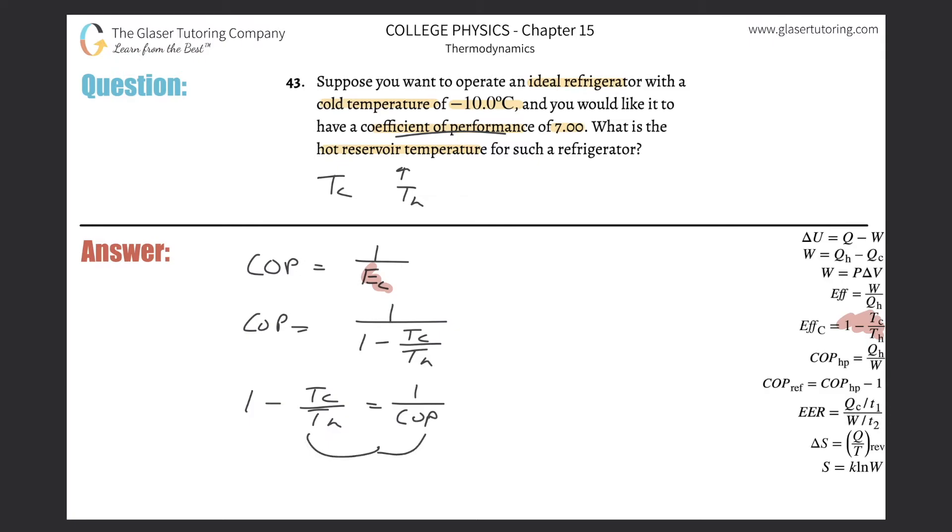So this is basically one minus then one over coefficient of performance is equal to then cold temperature divided by the hot. And now look, I can do that little trick again. I want the hot, so I'm just going to bring whatever, literally everything in the denominator on the right, and then switch it with everything that's in the numerator on the left.